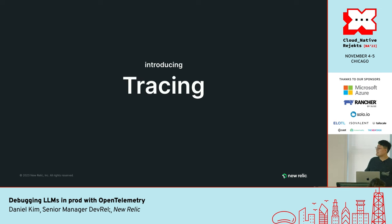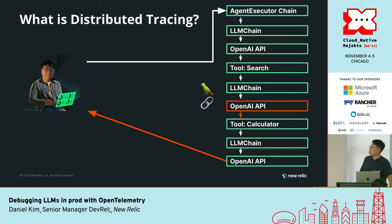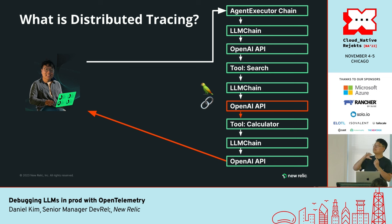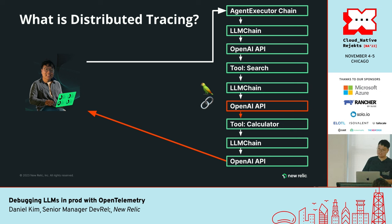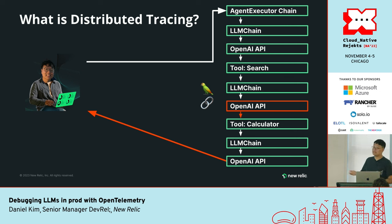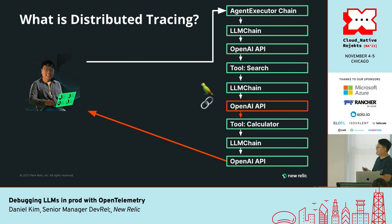That's where tracing comes in. Tracing is basically the idea that you can observe a request as it goes end-to-end, input-to-output, through an entire system. This is really great if you want to identify what part of your system is a bottleneck or contains errors. This is an example of a trace of how my amazing LangChain application came to the final answer that is wrong. I can see right here in this particular trace that this particular OpenAI API call returned the wrong answer.